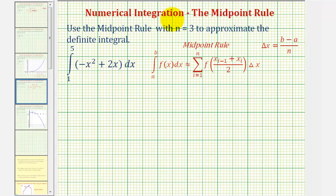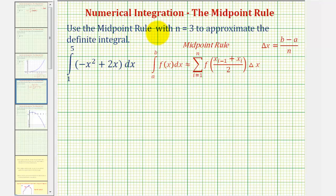Welcome to an example of numerical integration. We want to use the midpoint rule with n equals three to approximate the given definite integral. Notice how we're integrating on the interval from one to five, and since n equals three, we'll be using three rectangles to approximate this definite integral. Because we're using the midpoint rule, we'll use the midpoint of each subinterval to determine the function value, which will be the height of each rectangle.